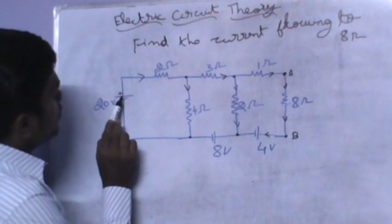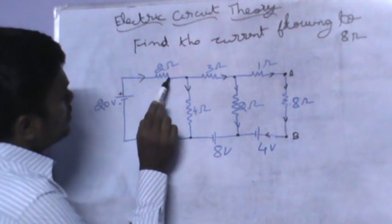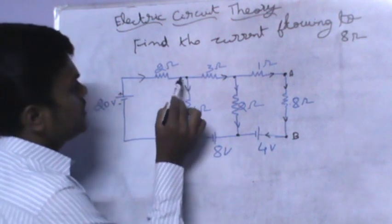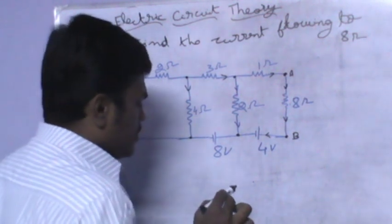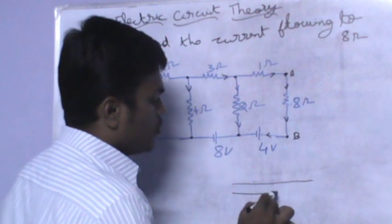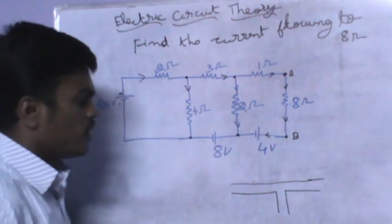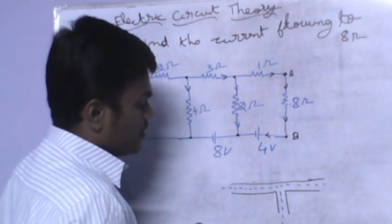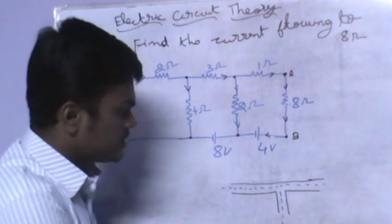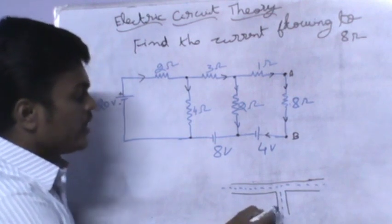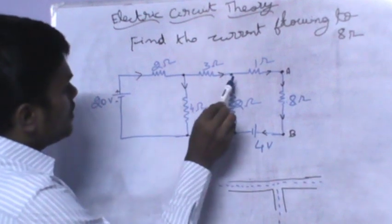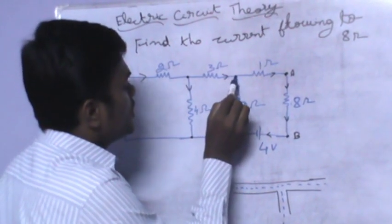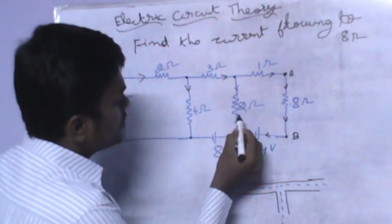The current starts from the positive terminal, first flows through the 2 ohm resistor, then at the branch it may split to the 4 ohm resistor as well as the 3 ohm resistor. This is like a water pipe with a divider — some water flows straight and some deviates. Likewise, some current flows straight and some flows into the other branch, and some current flows to the 2 ohm resistor.